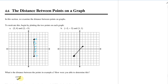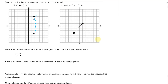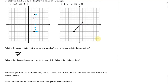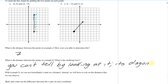Now looking at graph B, what is the distance here? You can see, just between this example and this one, this is not as straightforward. Because it's a diagonal, you can't just tell by looking at it.